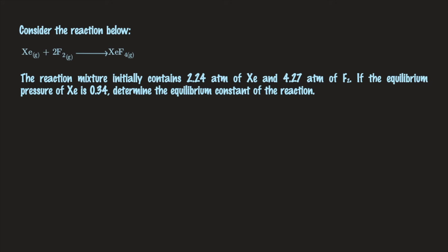Question number 5. The reaction mixture initially contains 2.24 atm of xenon and 4.27 atm of fluorine. If the equilibrium pressure of xenon is 0.34, determine the equilibrium constant. We are given the balanced equation: Xe + 2F₂ → XeF₄. Setting up the ICE table: initially 2.24 atm Xe, 4.27 atm F₂, and 0 product. The changes are −x, −2x, and +x respectively, giving equilibrium values of 2.24−x, 4.27−2x, and x.